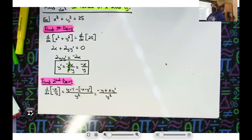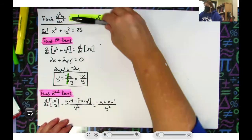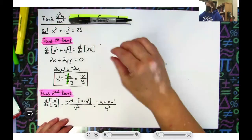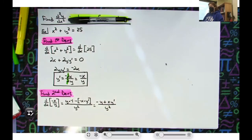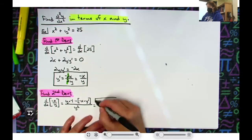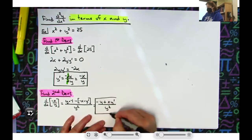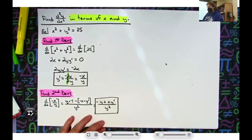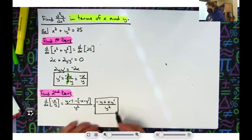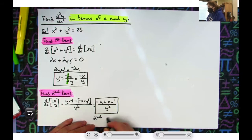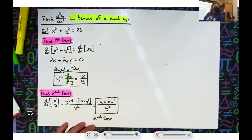Simplifying that gives us negative y plus x·y prime, all over y squared. Now, technically, I have found the second derivative — but they want it in terms of x and y. I've got y, x, and y squared, but I also have a y prime, and I can't have a y prime. So this is my second derivative, but I'm not done because I'm not in terms of x and y.